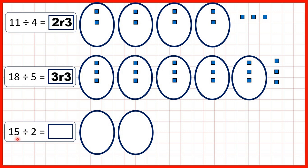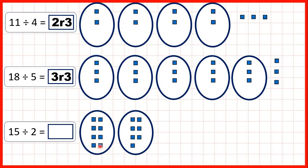Now let's share out 15 counters between 2 groups. But this counter here can't be shared out because we need to make sure that we have groups of the same size. So now we have 7 counters in each group and 1 remainder, so we have 7 remainder 1.